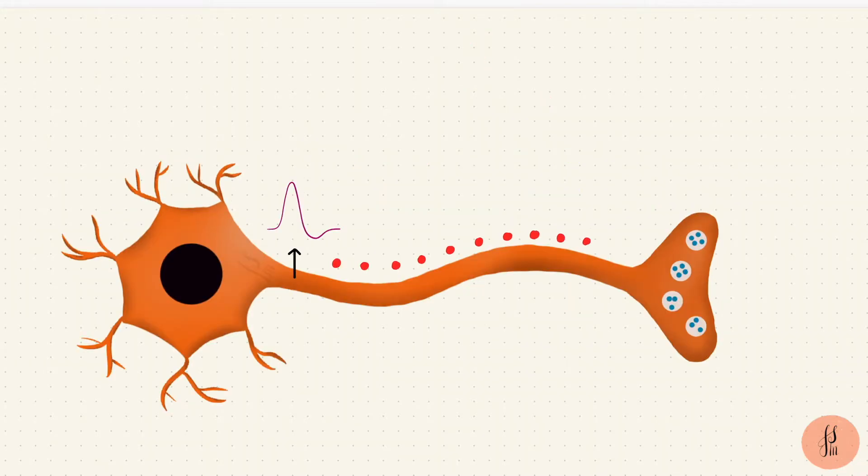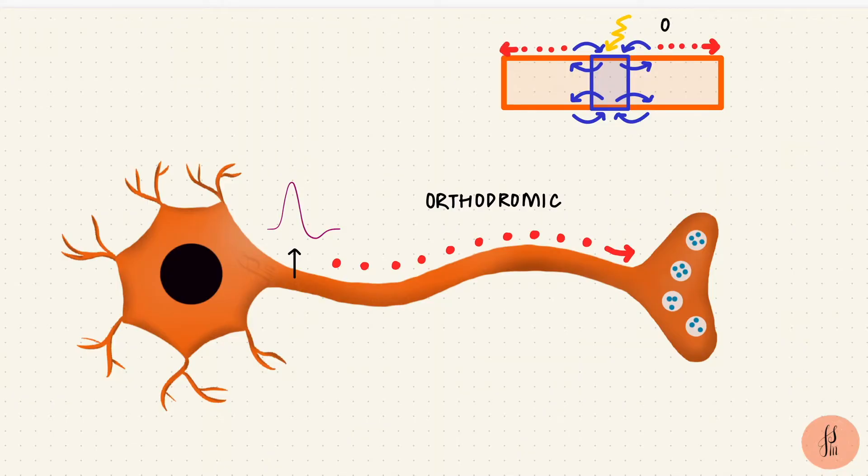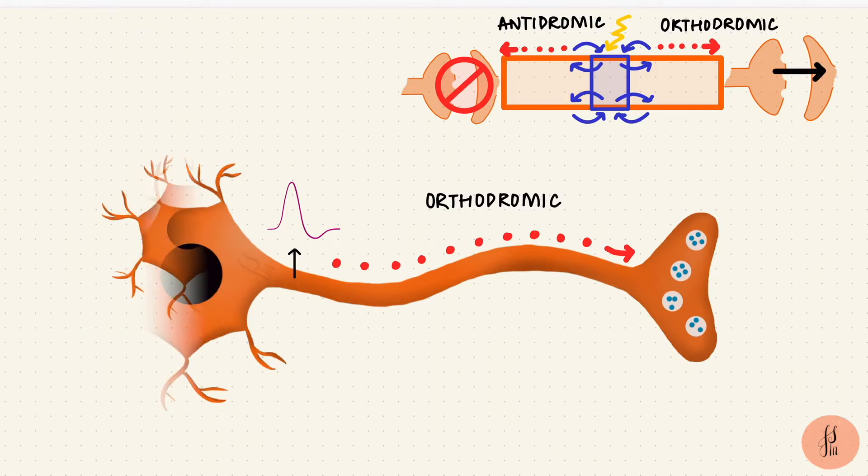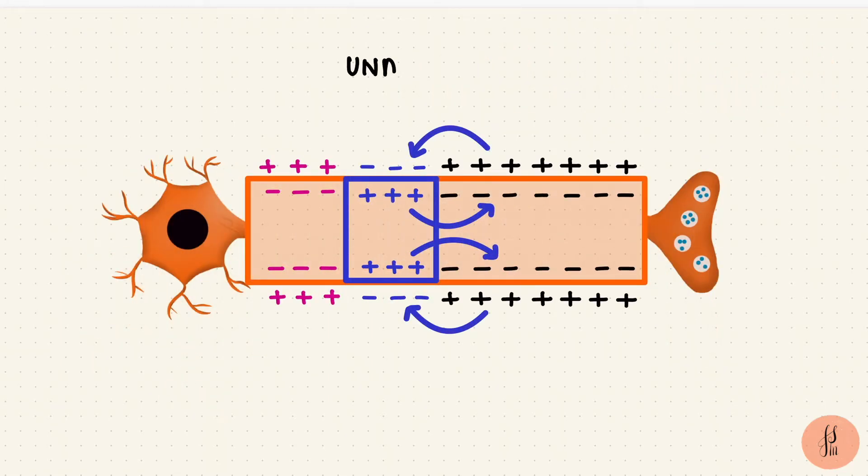Once that action potential reaches the synaptic terminal, it's going to stimulate the release of a neurotransmitter. This conduction is orthodromic, where it's going towards the synaptic terminal. If a stimulus were to be applied at the center of the axon, the propagation would happen in either direction. Orthodromic is towards the terminal, and antidromic is backwards. But the synapse is a one-way street, so the one going backwards can't cross the first synapse it encounters. So usually it's orthodromic conduction, and we're looking at an unmyelinated neuron.